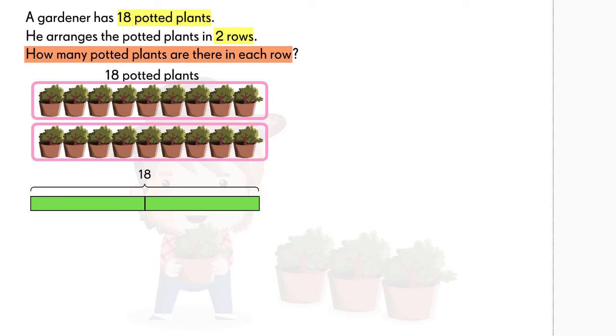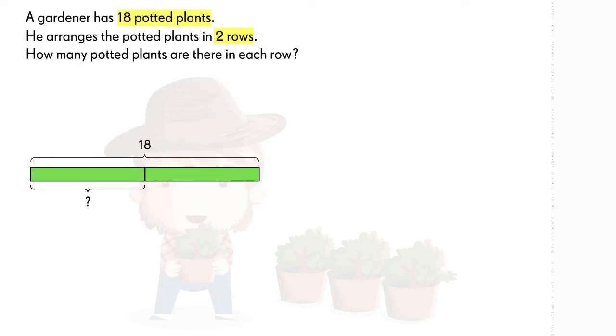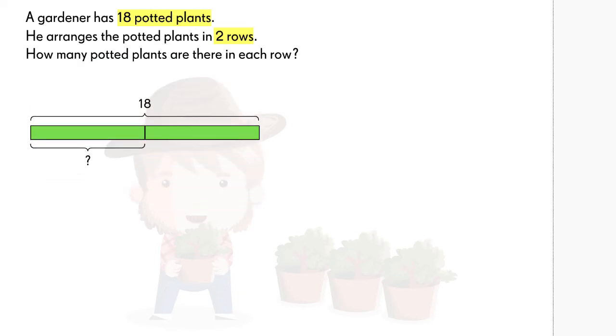We need to find the number of plants in each row. We have drawn a part-whole model. Each of these rectangles is a part. Both parts make up the whole.